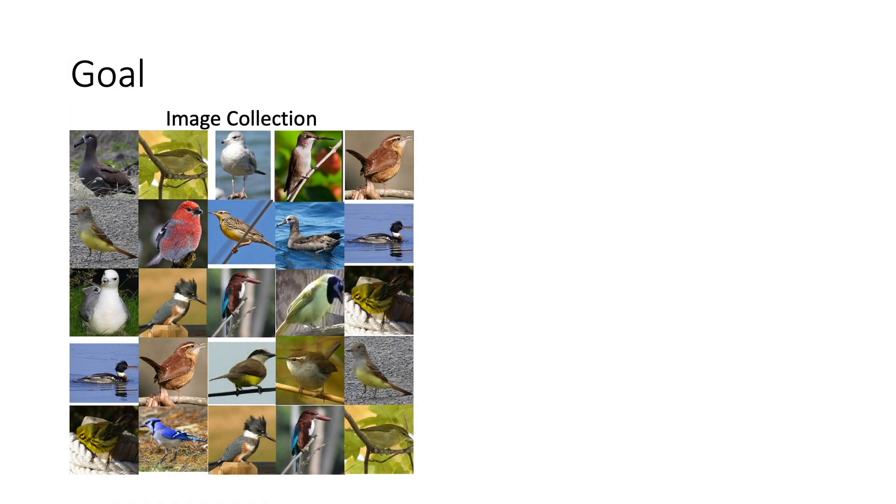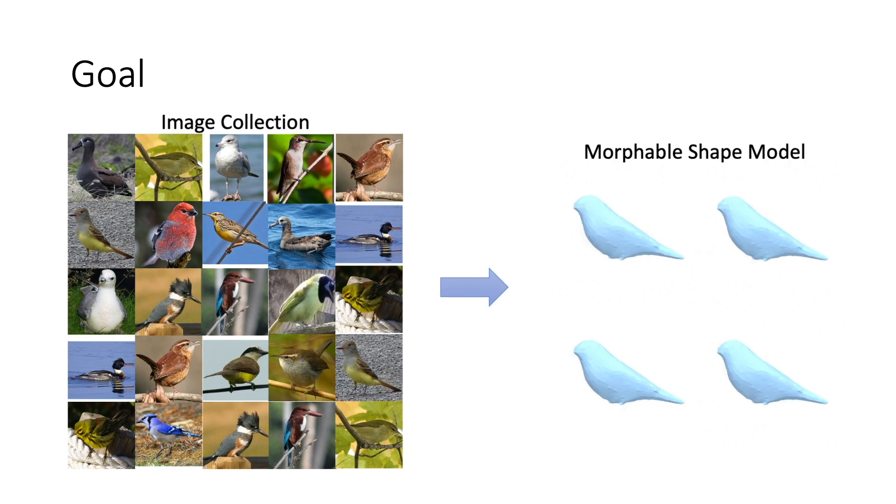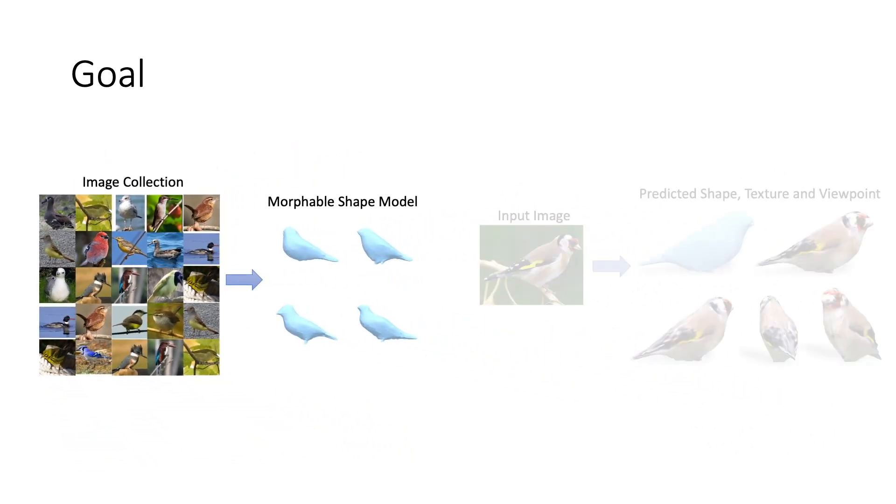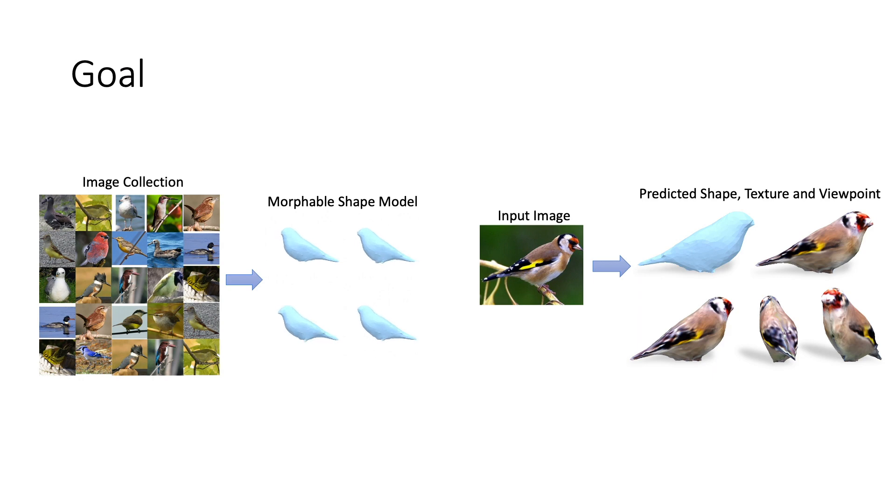In this work, our goal is to use an image collection without any ground truth 3D supervision for learning a 3D morphable model of a shape for a particular category. From a single input image, we also want to reconstruct shape, viewpoint, and texture.